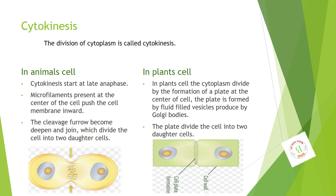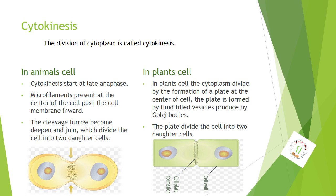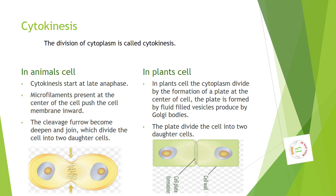In plant cells, the cytoplasm divides by the formation of a plate at the center of the cell. The plate is formed by fluid-filled vesicles produced by Golgi bodies. The plate divides the cell into two daughter cells.